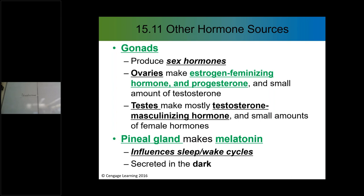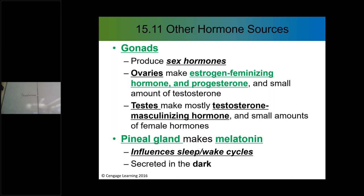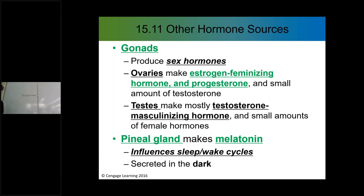The pineal gland is very deep within the brain. The pineal gland secretes melatonin — it's easy to confuse with melanin. Melanin is for pigment — skin and hair pigmentation. Melatonin has the effect of helping to calm the body so that it prepares you for sleep. Many people have taken melatonin as a supplement — it can calm the body down and be used as a sleep aid. That's what's produced by the pineal gland.